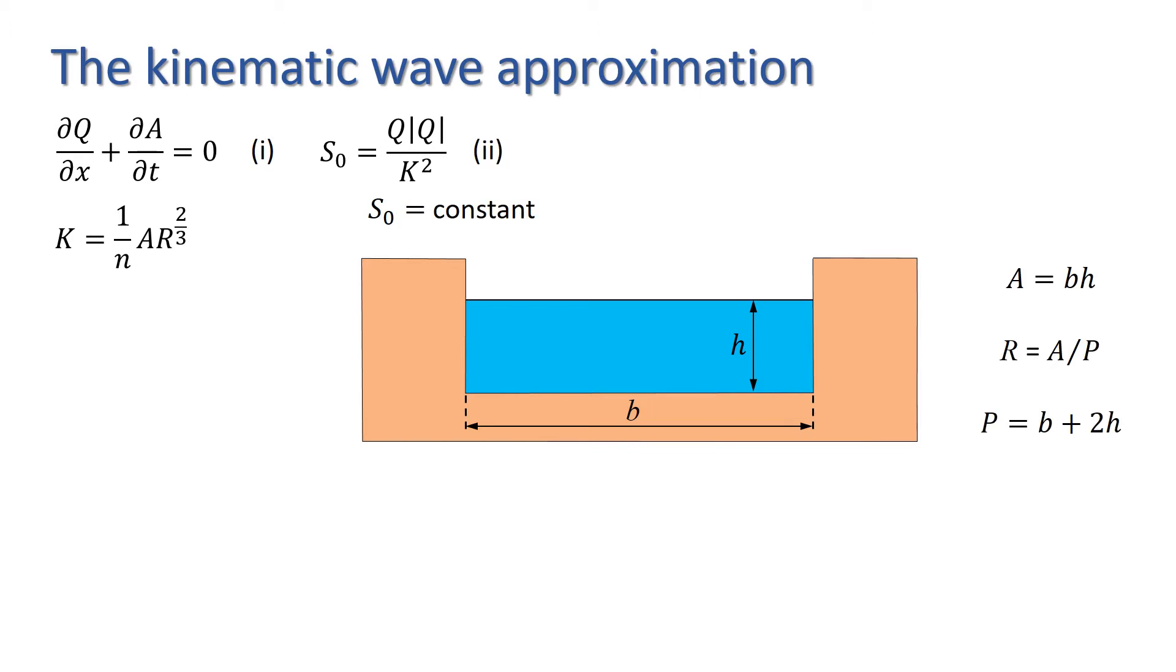Going back to equation two, we can see that the magnitude of Q will be given by the square root of S₀ times K, giving us Q equals root S₀ over n times A times A over P to the two thirds. Or Q equals root S₀ over nP to the two thirds times A to the power of 5 over 3.